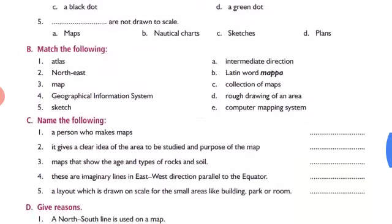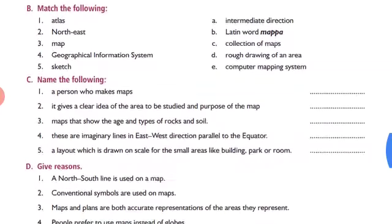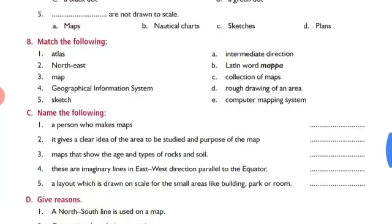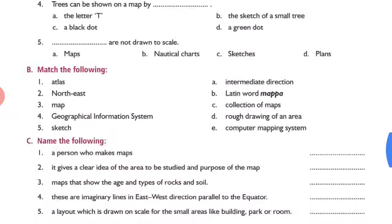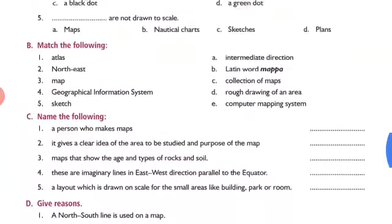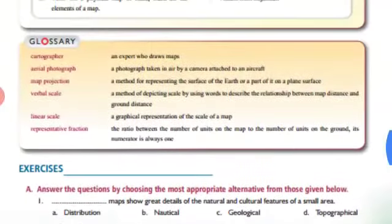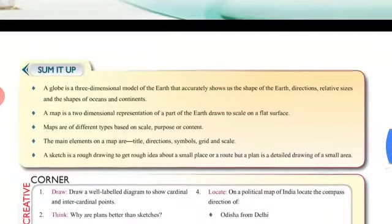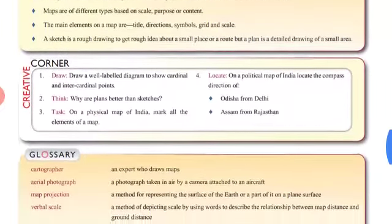Then, match the following for Exercise B, and Exercise C is 'Name the following.' So try to complete Exercises A, B, and C on the basis of your intelligence, memory, and Chapter 2: Globes and Maps, which I have already discussed.